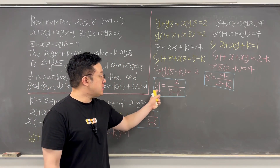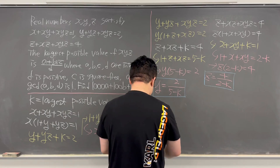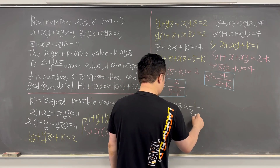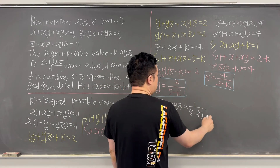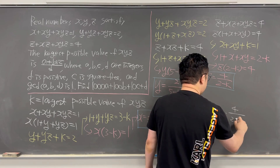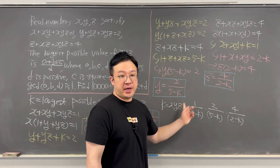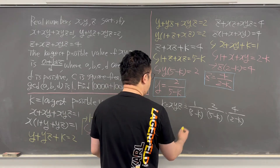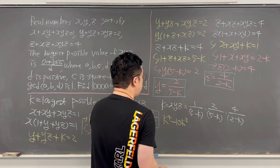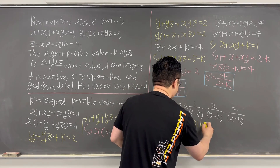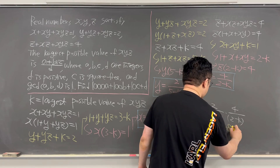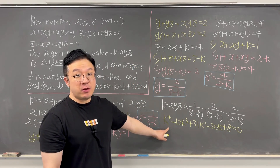Using these expressions for x, y, z in terms of K, we can represent K = xyz as: [1 / (3 - K)] times [2 / (5 - K)] times [4 / (2 - K)]. Doing the cross multiplication, we get a quartic equation: K⁴ - 10K³ + 31K² - 30K + 8 = 0.